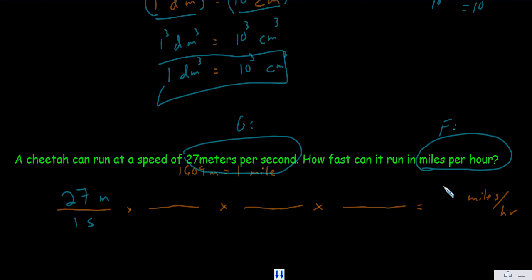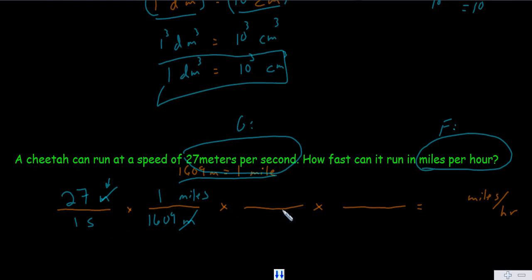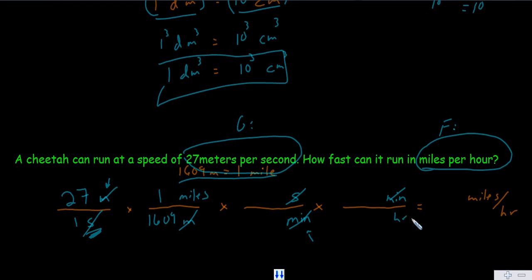What unit would you like to get out of first? We'll start with meters, converting into miles — you need miles on top. You may already know that 1,609 meters is the same length as one mile. That gets us out of meters and into miles. We also need to get out of seconds. Right now seconds is on the bottom, so to cancel it we put seconds on top, with minutes on the bottom. Seconds cancel out. Then to get from minutes into hours, put minutes on top and hours on the bottom.